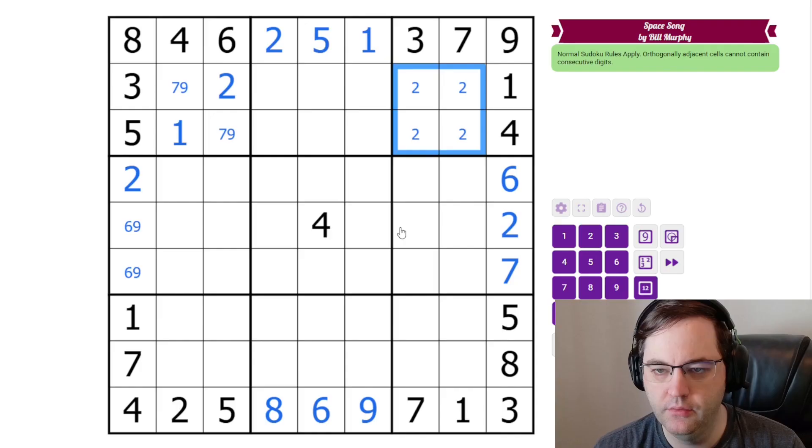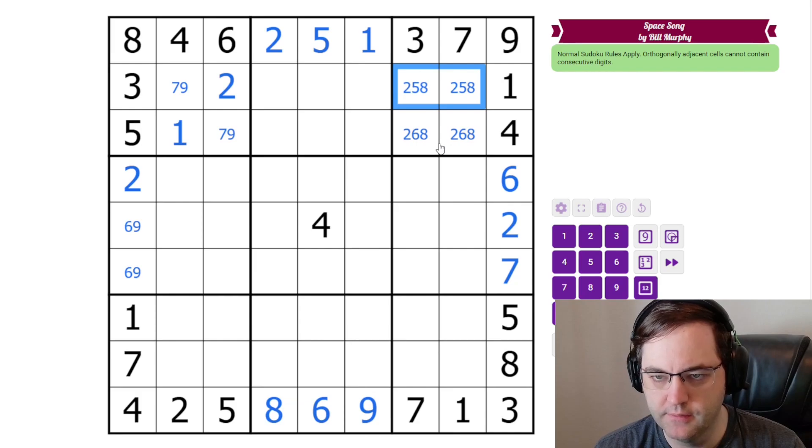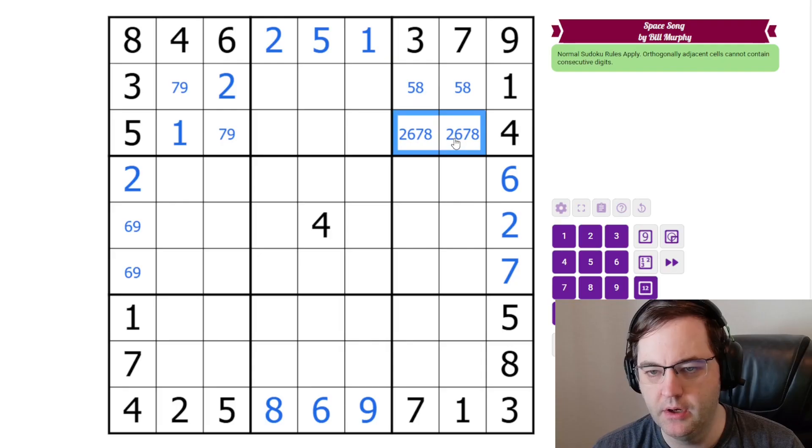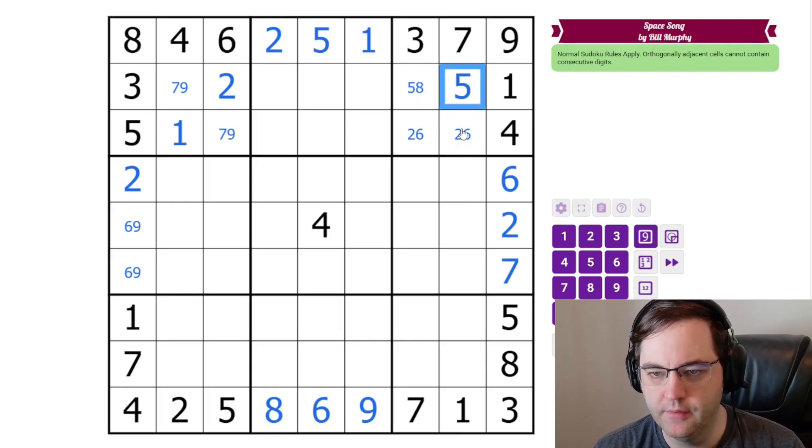These are 2, 5, 6, 8. Again, we have 5 and 6 that can't go next to each other. And these aren't 5. So, one of these is 5. These can't be 6. These aren't 2. So, now we have a 5, 8 pair. And the 7 is going to resolve this. This is the 5, which means this can't be 6. And that places all of those digits.